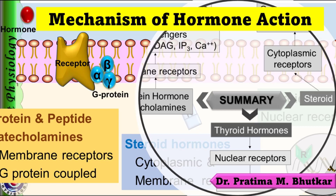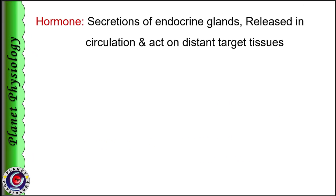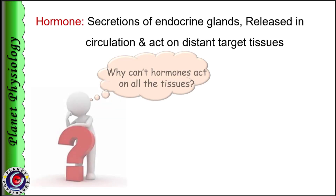As we have seen in previous video, hormones are the chemical messengers secreted by endocrine glands. They are released into circulation and act on distant target tissues. As they are present in circulation, potentially they can exert their effect on each and every cell of the body, but this doesn't usually happen.